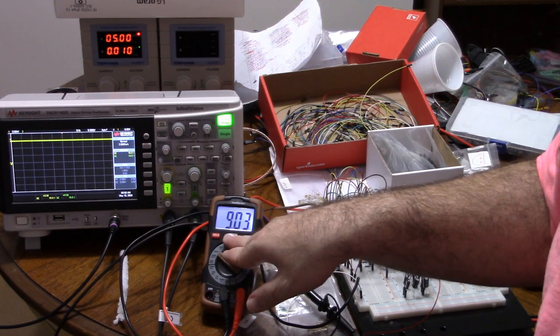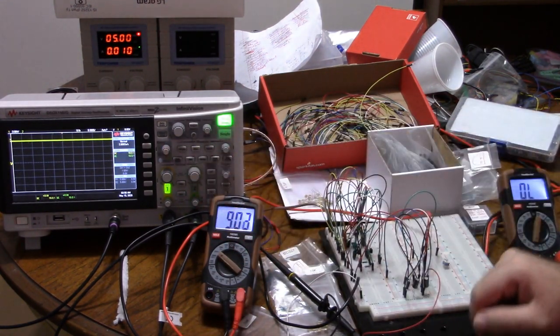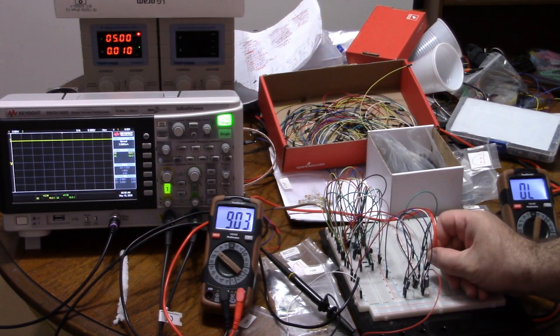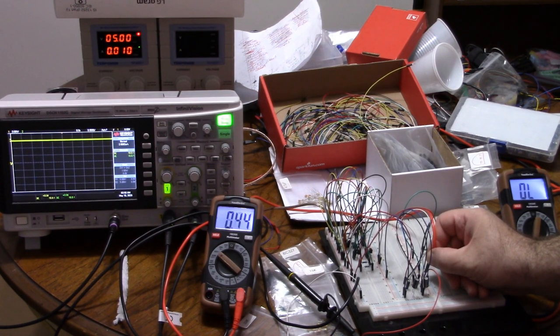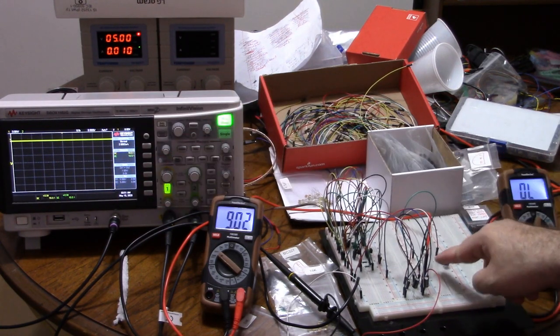I'm getting 9.03 with the 1 megaohm load plugged in. And if you watch the oscilloscope closely, as I plug in and unplug the multimeter, you will see that the line is not going up and down very appreciably. So basically, it's a minuscule load. Great news.